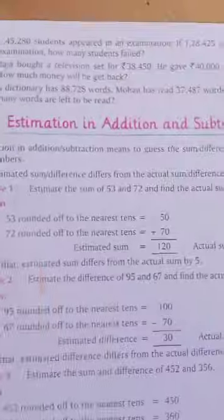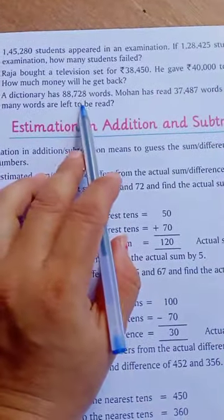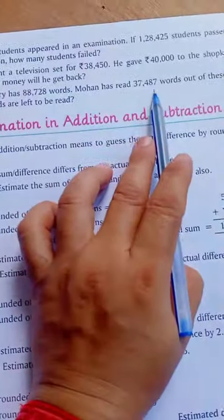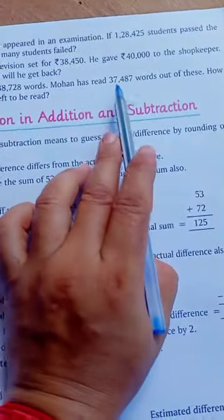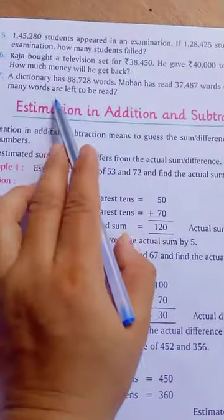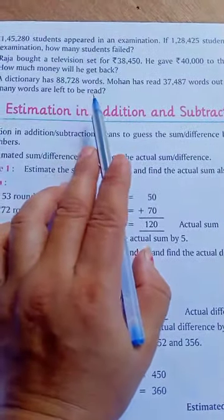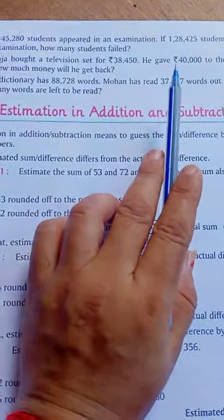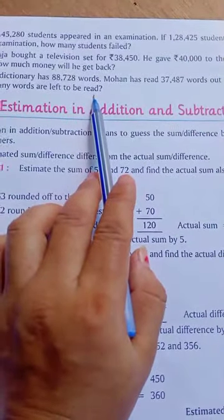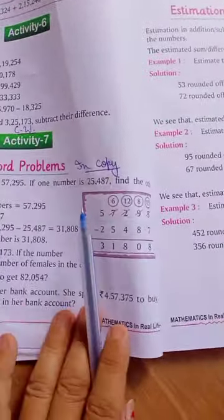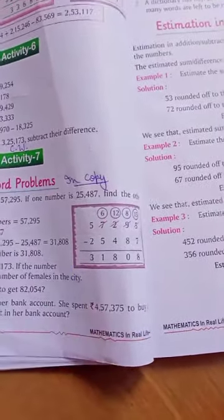Now in the last question: our dictionary has 88,728 words. Mohan has read 37,487 words out of these. How many words are left to be read? Total dictionary words minus words already read gives the left words. Now students, solve your activity number 7 in your classwork copy with the help of the PDF, and the rest part in your homework copy. Thank you.